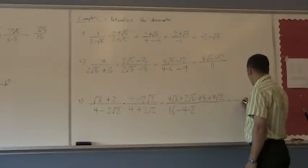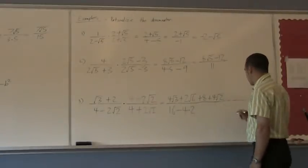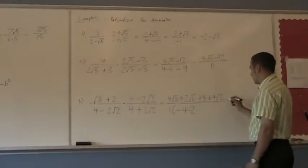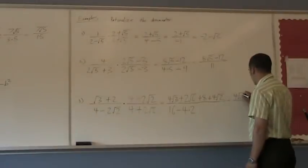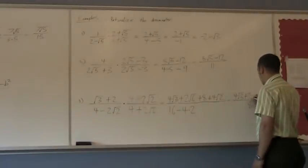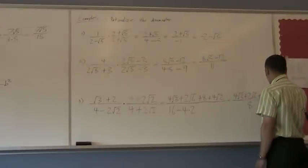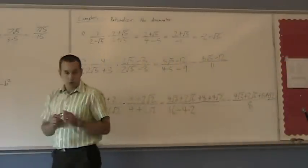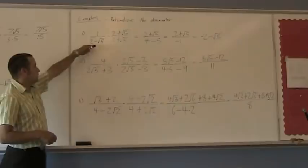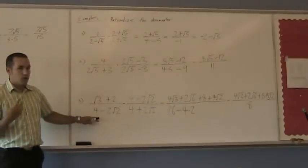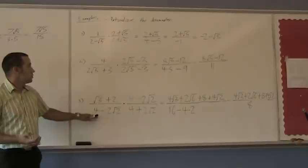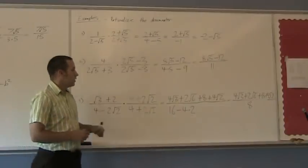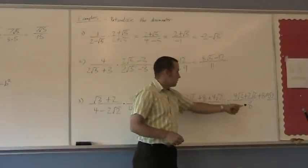And so we rewrite this with 16 subtract 8 is going to give me 8 for the denominator. The top, you rearrange it however you like. We're going to just leave it in the same order. 4 square root of 3 plus 2 square root of 6 plus 8 plus 4 square root of 2. And it's the same procedure every time. You're always just multiplying top and bottom by the conjugate of the denominator. And you end up with a rationalized denominator.